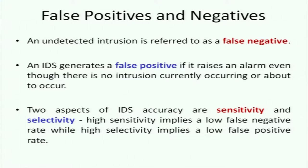An undetected intrusion is referred to as a false negative. An IDS generates a false positive if it raises an alarm even though no intrusion is occurring or about to occur. Two aspects of IDS accuracy are sensitivity and selectivity: high sensitivity implies a low false negative rate — the IDS has detected all intrusions — while high selectivity implies a low false positive rate — the IDS is very selective about sounding alarms.